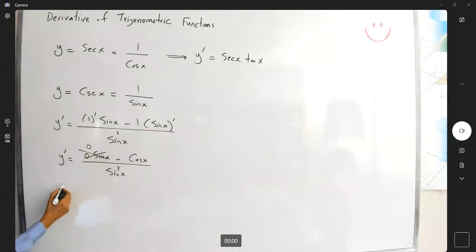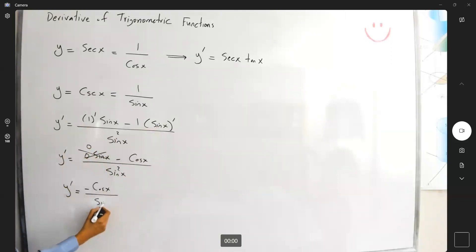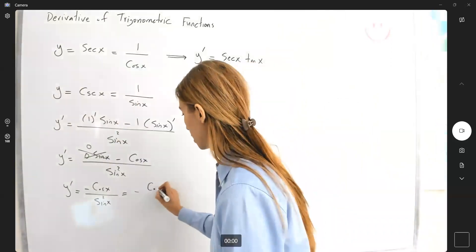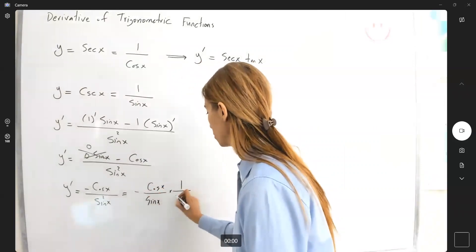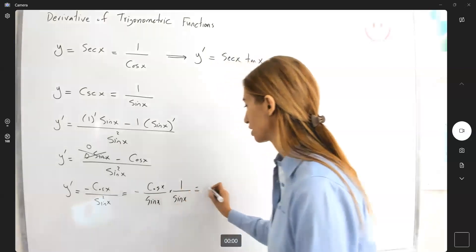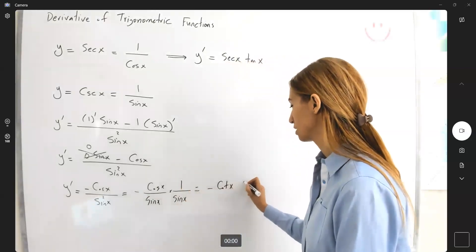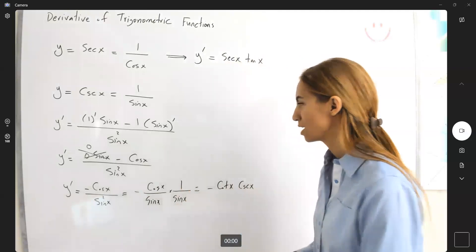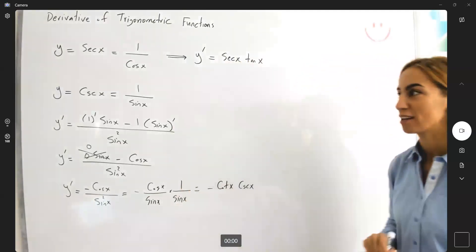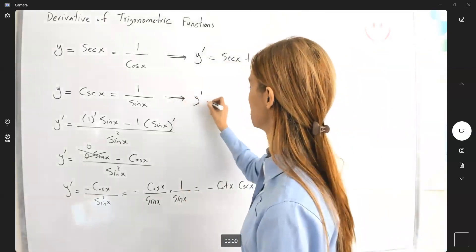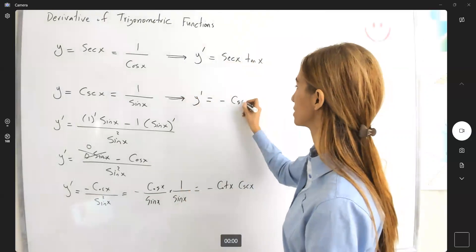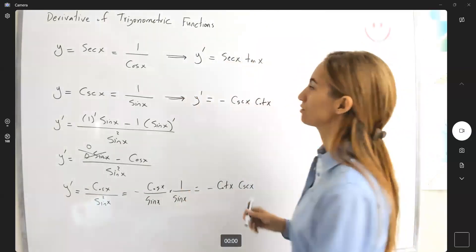The first term is 0, so y' becomes negative cosine x divided by sine squared of x, which is negative cosine x over sine x times 1 over sine x. This is nothing but negative cotangent of x times cosecant of x. So if y is cosecant of x, then y' becomes negative cosecant of x times cotangent of x.